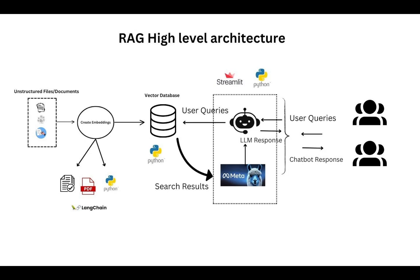Now let's look at the high-level flow and architecture diagram of LLMs that make use of RAG. Starting from the back: you load all the necessary documents from your storage or file system, create embeddings, and write them to the vector database. This completes one aspect of the flow — data preprocessing and writing to VectorDB. The second aspect is where you deploy your LLM using Streamlit and read from this vector database to provide relevant and accurate answers. The user queries accepted by the Streamlit app are sent to the vector database to find the most relevant content, using the Python SDK for that specific vector database. Once you get the search results, you pass them to the LLM to enhance the result and send it back as a response to the end users. This is the typical flow of an LLM using RAG.